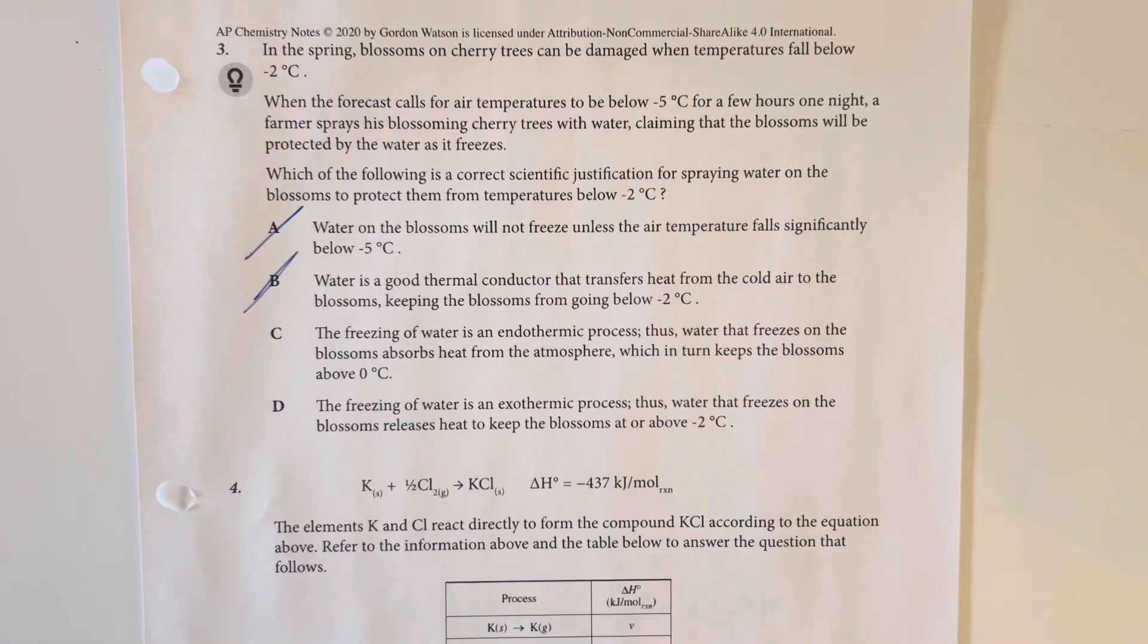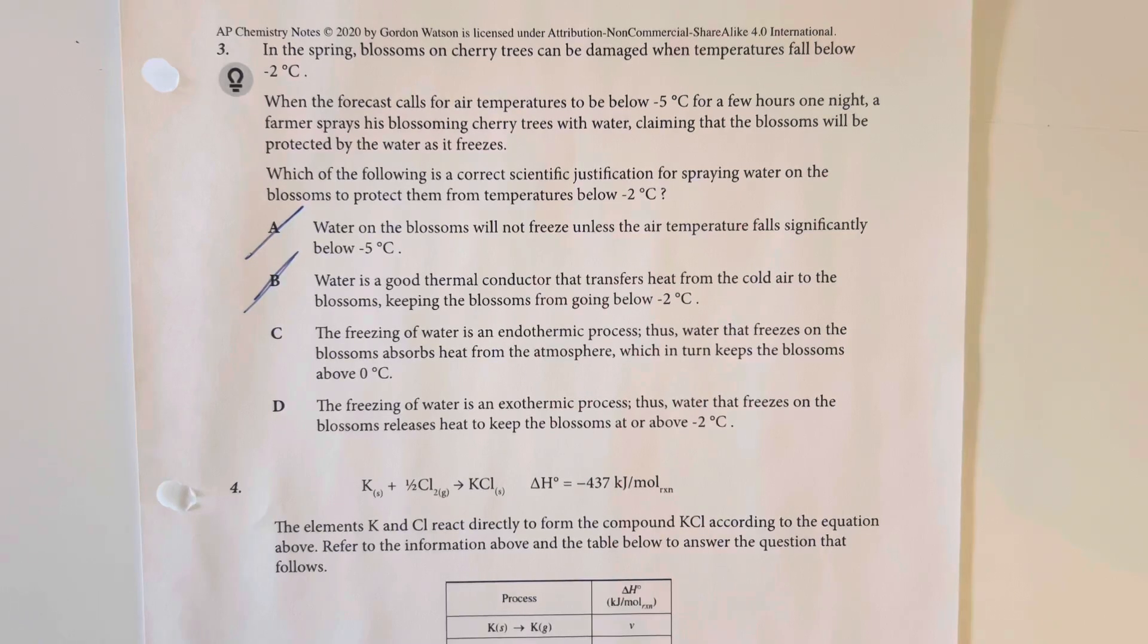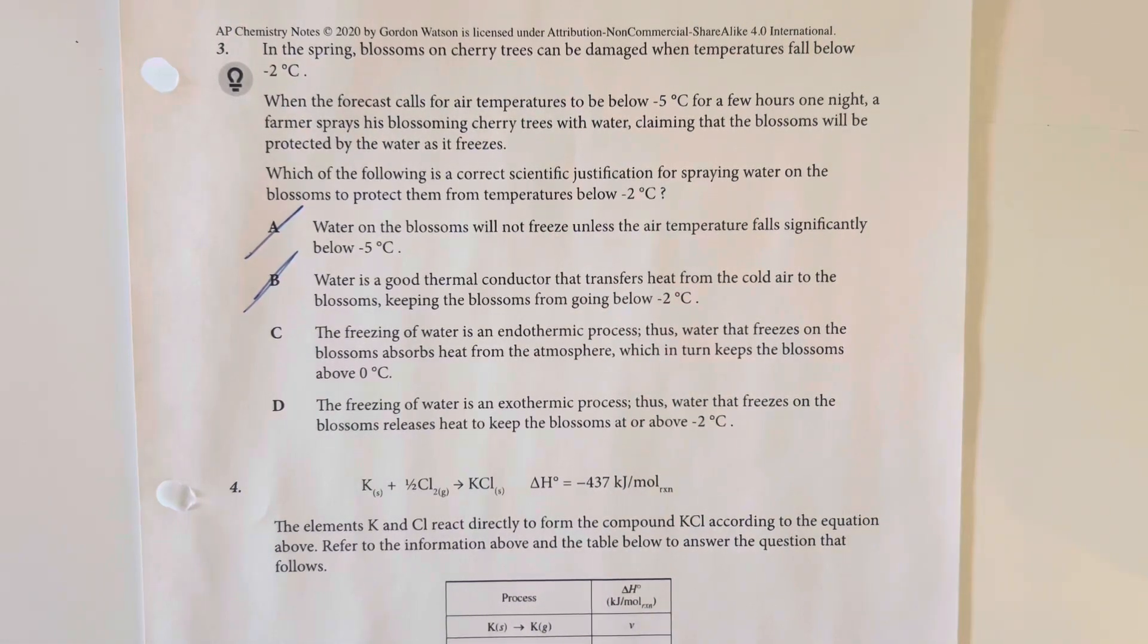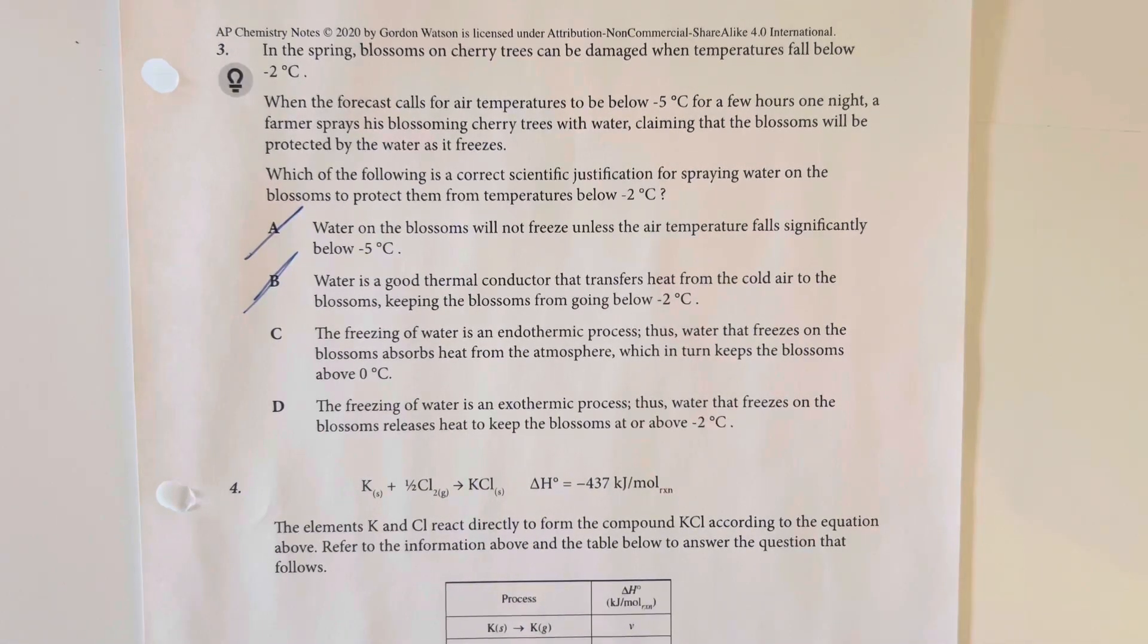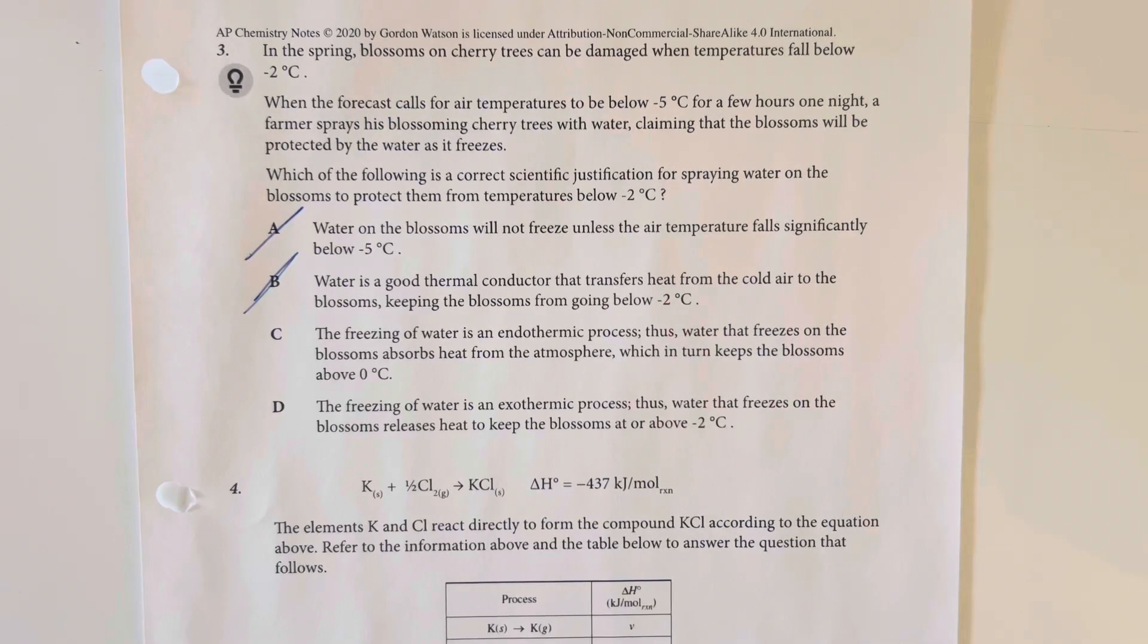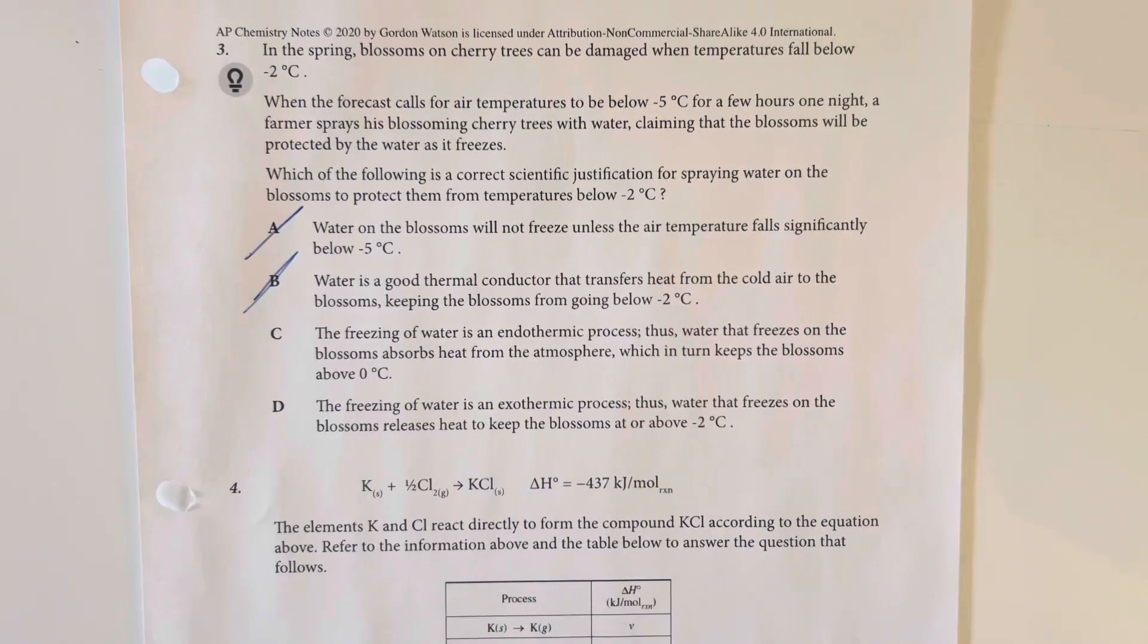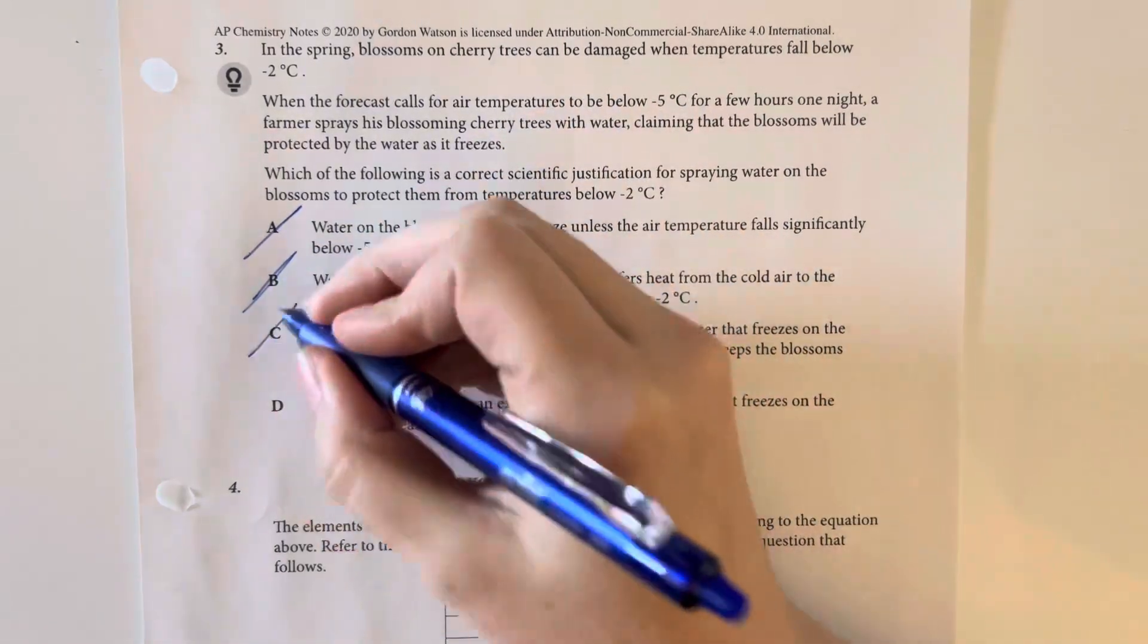The freezing water is an endothermic process. Thus, water that freezes on the blossoms absorb heat from the atmosphere, which in turn keeps the blossoms above zero degrees Celsius. So freezing is an exothermic process. We have to release energy to go from a higher energy state of liquid to a lower energy state of solid. So C is going to be eliminated.